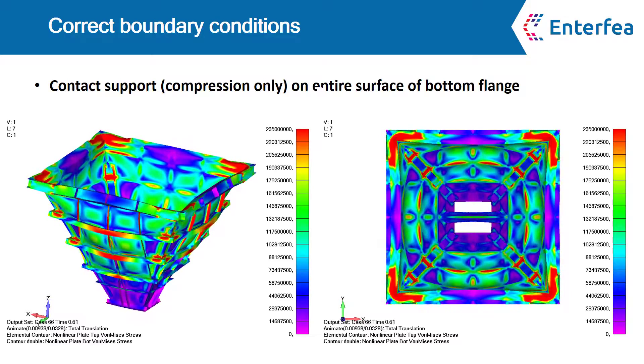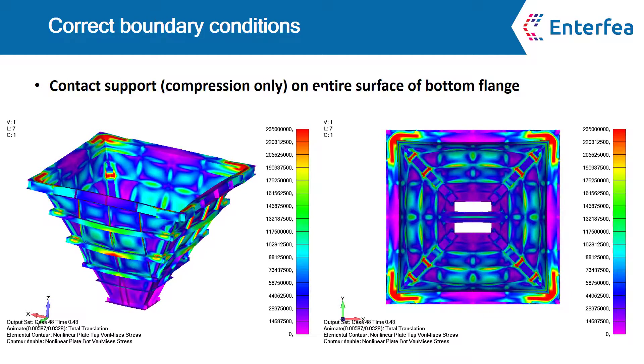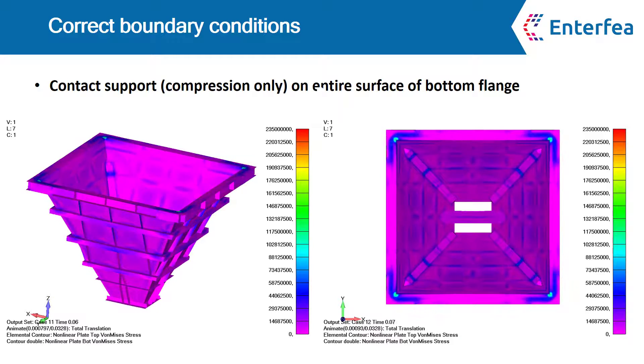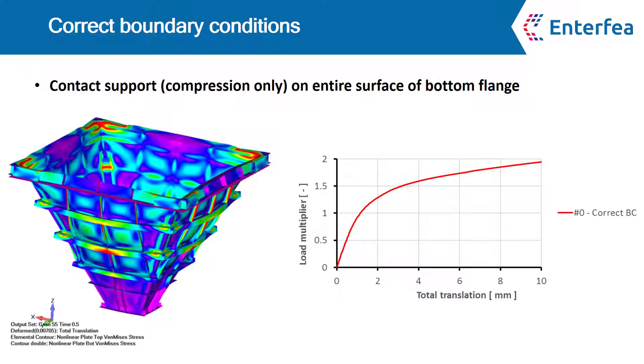Of course the load was increased far beyond the design values simply so we can see how the model behaves post failure. Since we want to compare the outcomes with different other boundary conditions that are possible here, I've created a stability path for the node in the corner of the support beam. We will compare this chart with the charts obtained for different solutions.